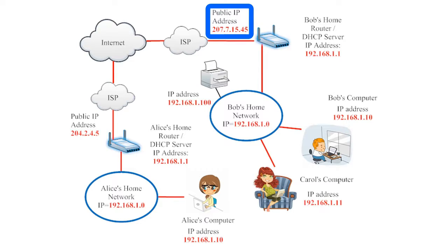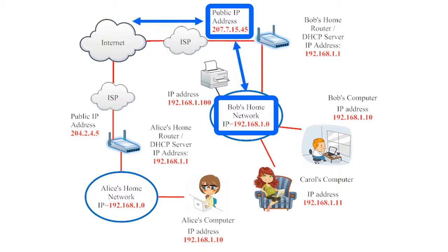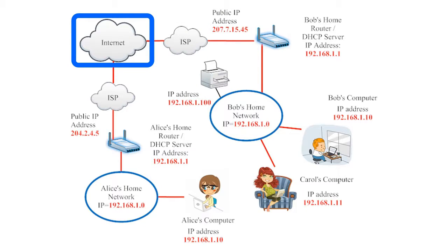The rules of IP require that every device has its own IP address, but Bob's ISP has only given him one IP address to work with. So Bob will use his router to create a private home network connecting his four devices together, and then connect his entire home network to the public internet through the one IP address that his ISP has assigned him.